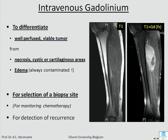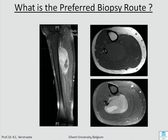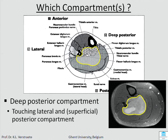You use gadolinium to differentiate between viable parts in the tumor and necrotic parts. The viable parts enhance and the necrosis does not enhance. You also need gadolinium for selection of the biopsy site. There is compartmental anatomy — you should find the relevant article to show you how to go to the tumor and not contaminate unaffected compartments.